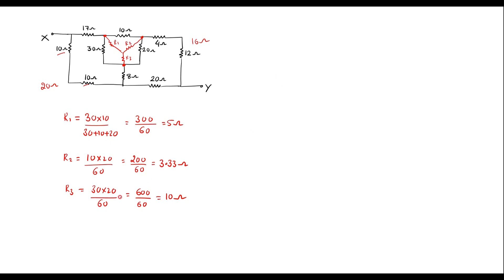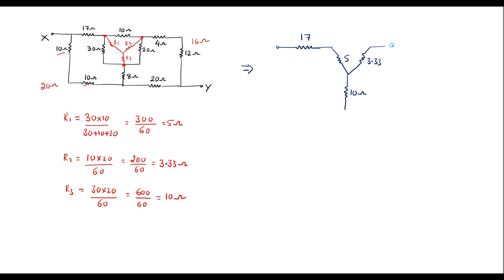Now let me redraw the circuit. Here I can represent the circuit: 17 ohm I will keep as it is. This is 70 ohm, and here R1, R2, R3 we have to connect. R1 has a value of 5 ohm, R2 has a value of 3.33 ohm, and R3 is 10 ohm. So we have converted the 30, 20, and 30 ohm delta into star values. This 4 ohm and 12 ohm are in series — that is 16 ohm. And here 10 ohm and 10 ohm are in series — it will be 20 ohm. And here 8 ohm is in series with 10 ohm.